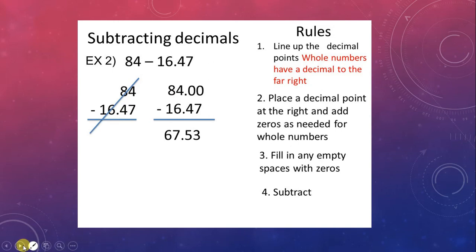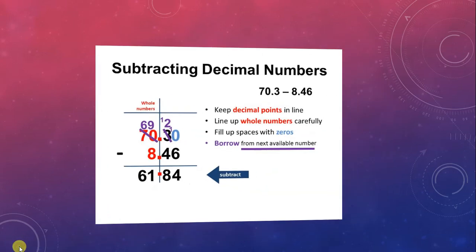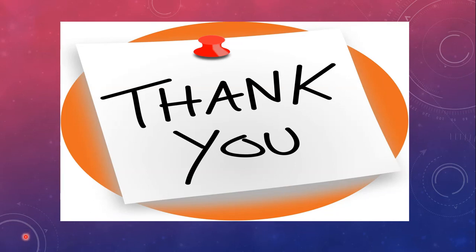One final subtraction example: decimal minus decimal with unequal places. Make decimal places equal by adding a zero. Then subtract: 10 minus 6 is 4; borrow to get 12 minus 4 is 8; 9 minus 8 is 1; and 6 remains. The answer is 61.84. Thank you, bye bye everyone — stay home, stay safe.